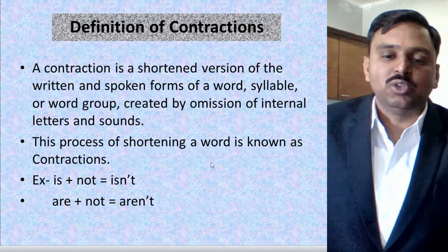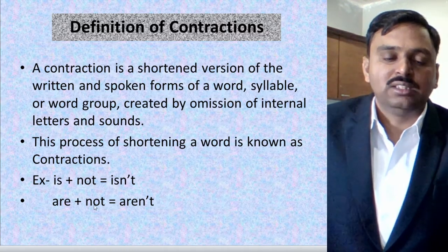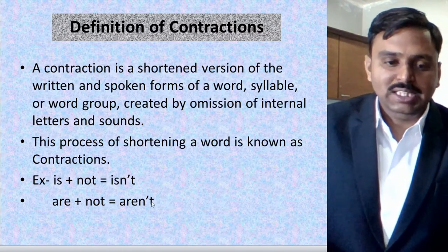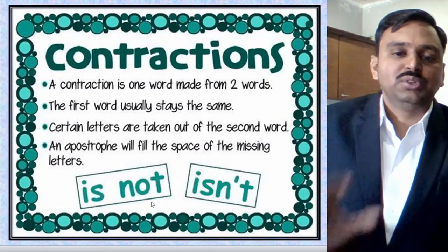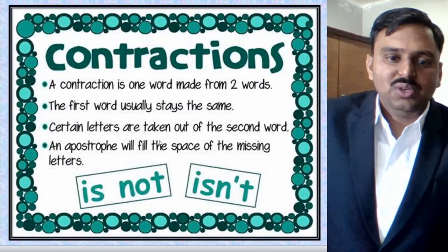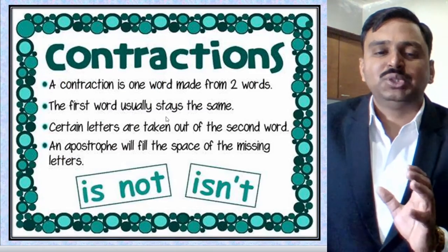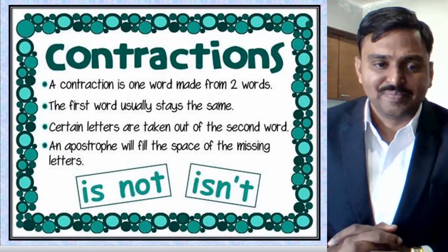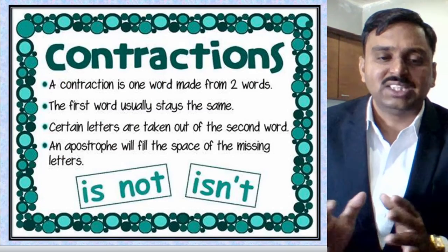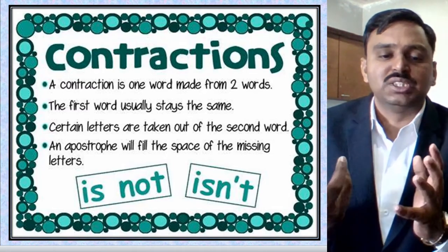The letter O is omitted in both 'isn't' and 'aren't.' So this is what contractions are about. Now there are some common rules to note. A contraction is one word made up from two words.